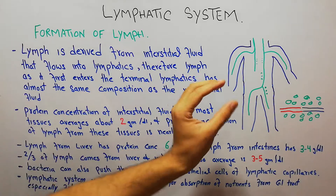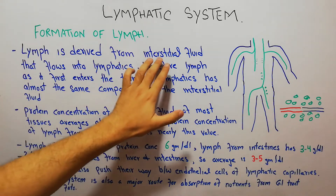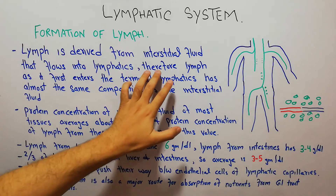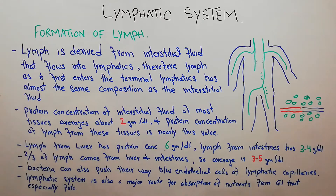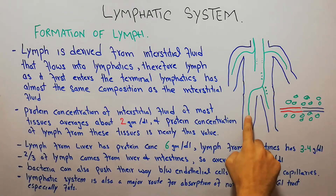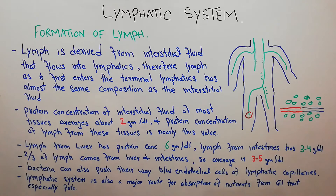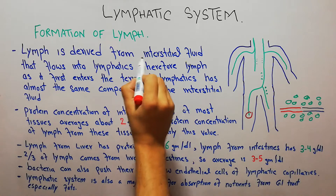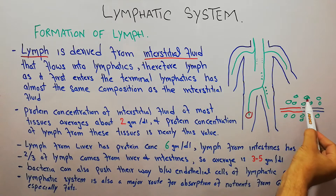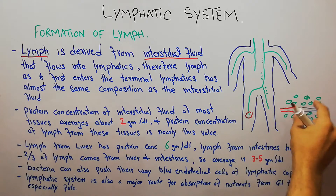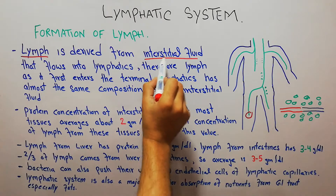Lymph is derived from the interstitial fluid that flows into the lymphatics. Therefore, when lymph first enters the terminal lymphatics, it has almost the same composition as the interstitial fluid. Initially, when lymph derives at the terminal lymphatics — whose structure we discussed in our previous lecture — its composition is just like the interstitial fluid, which is the fluid present in the spaces between the cells in the tissues.